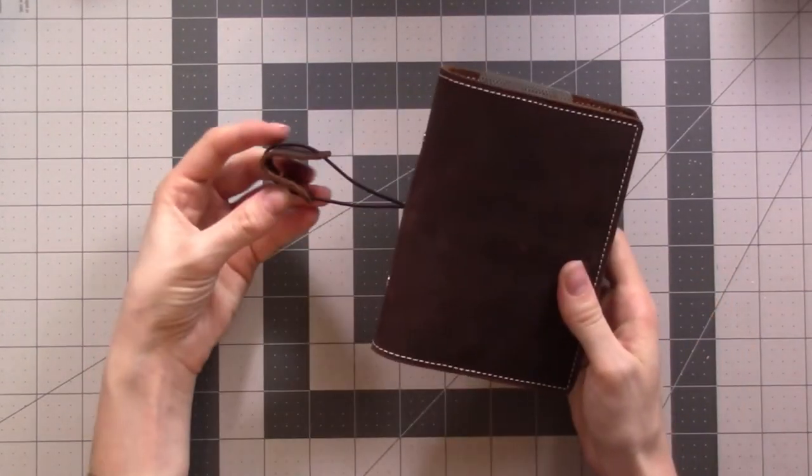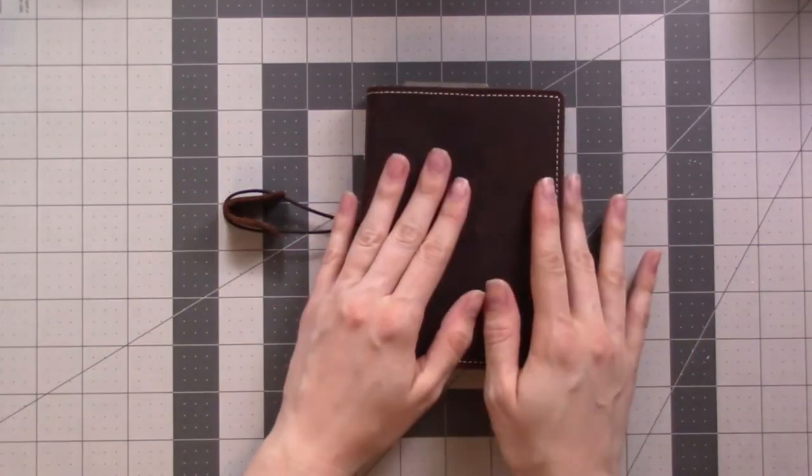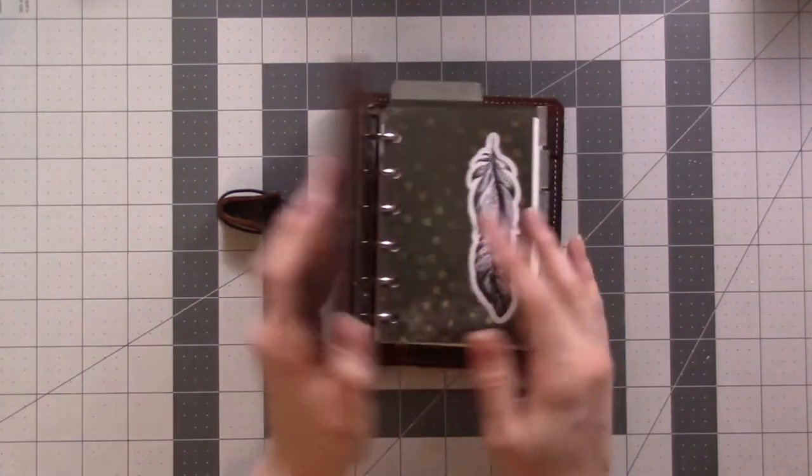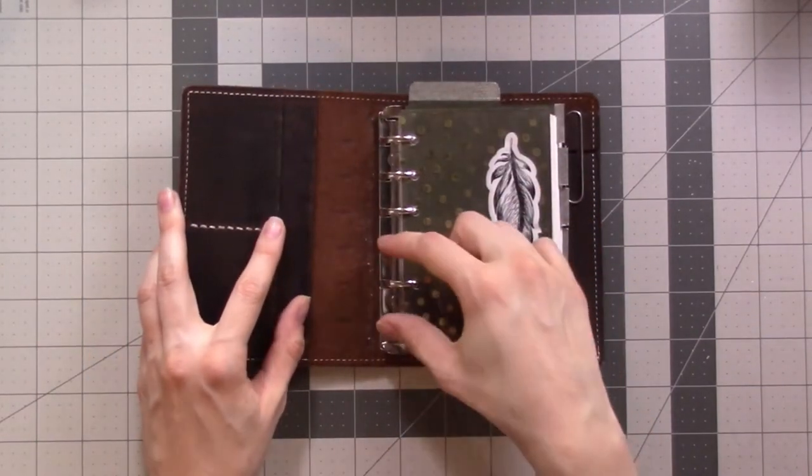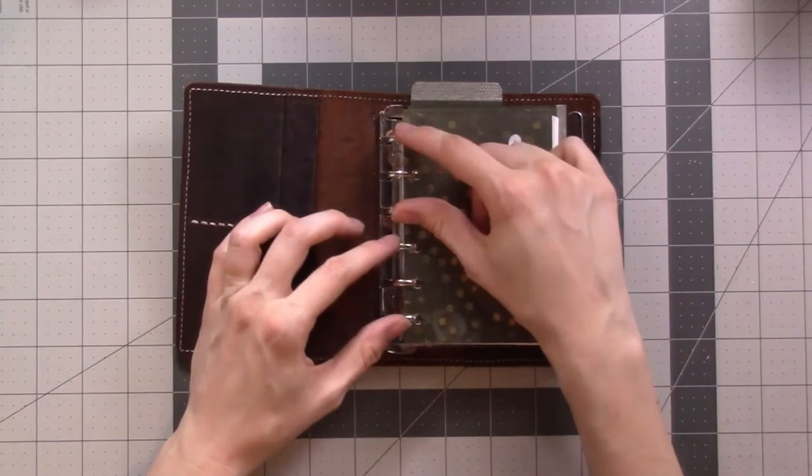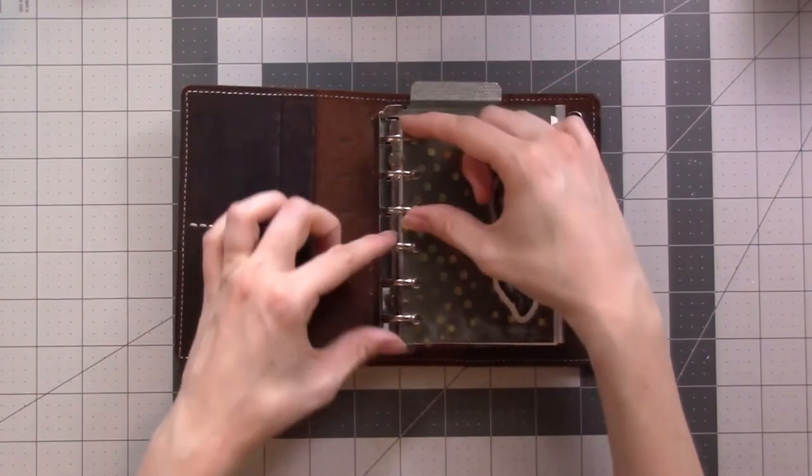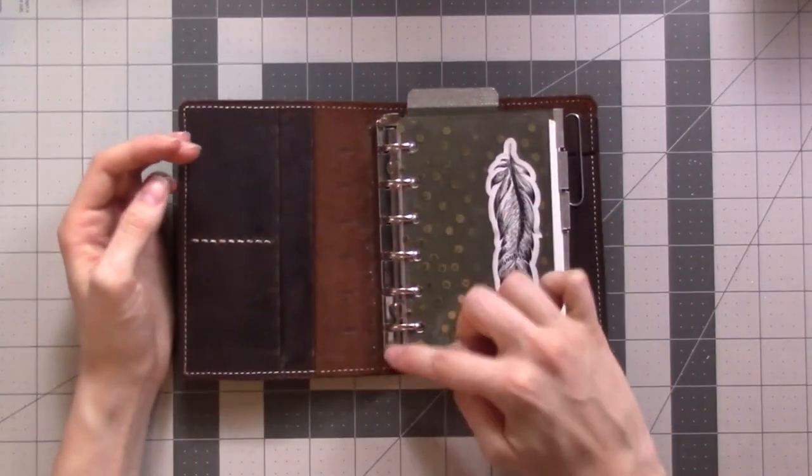It's listed as an A7 slash pocket size, so it fits the Filofax pocket size. This is what the rings look like - they're all evenly spaced. I'm pretty sure that it's similar to how a personal size works except that has a bigger gap between these two.